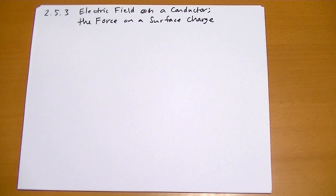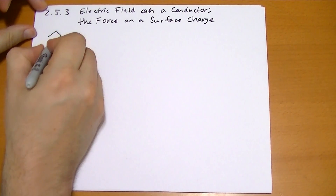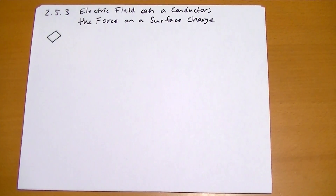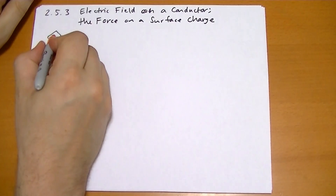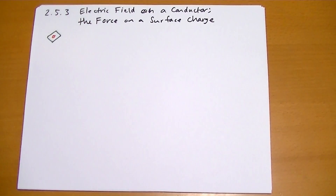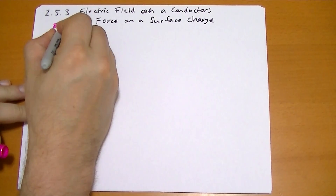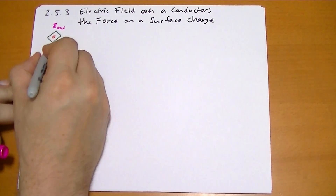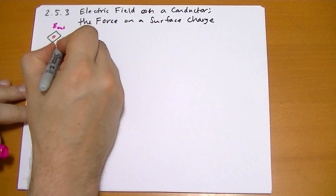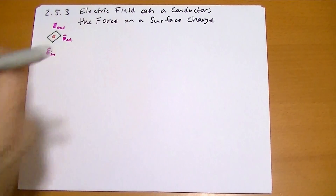So just outside — and we really have to be very careful here — we have some surface, and we've approximated that with a very tiny patch of that surface which has a surface charge density of sigma. We're basically thinking about three electric fields: the E vector on the outside, the E vector on the inside, and the E vector at the surface.